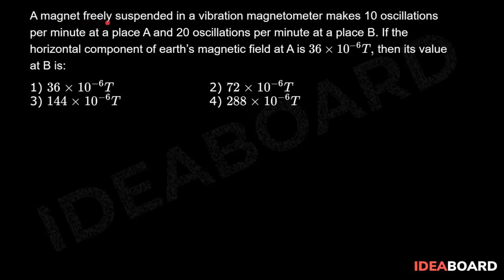A magnet freely suspended in a vibration magnetometer makes 10 oscillations per minute at a place A and 20 oscillations per minute at place B. If the horizontal component of Earth's magnetic field at A is 36×10⁻⁶ tesla, then its value at B is what? Dear students, we know the expression for the period of oscillation of